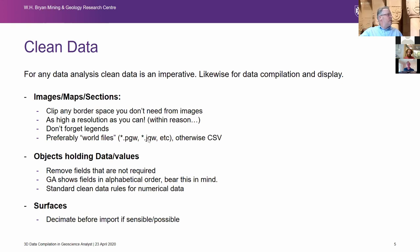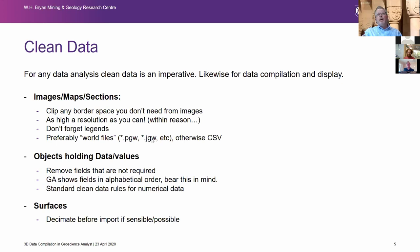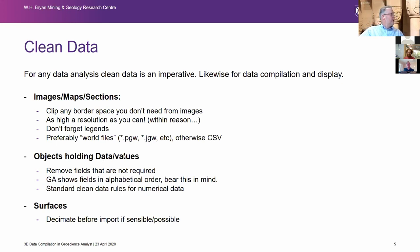For a JPEG image, the world file extension is JGW — it allows any system you're going into to know the real-world coordinates of that image or map. Objects typically hold data values: a magnetic grid may have one field like total magnetic intensity, while geochemical points may have 40 elements plus other information, and triangulated surfaces may have multiple fields of data associated.